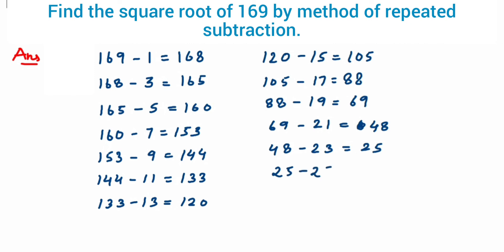The last odd number here we're going to use is 25. So 25 minus 25 is equal to 0.